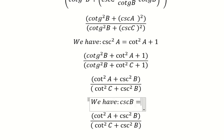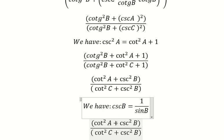Cosecant B equals one over sine B. Now we need to transform this one into this one.